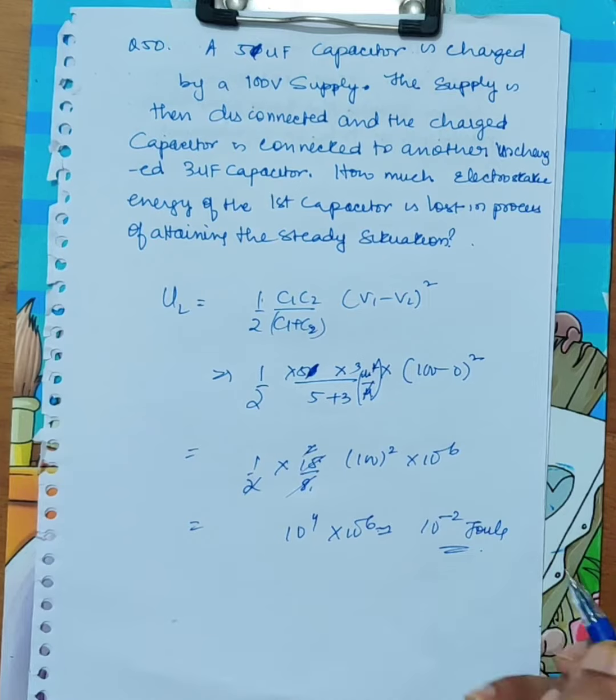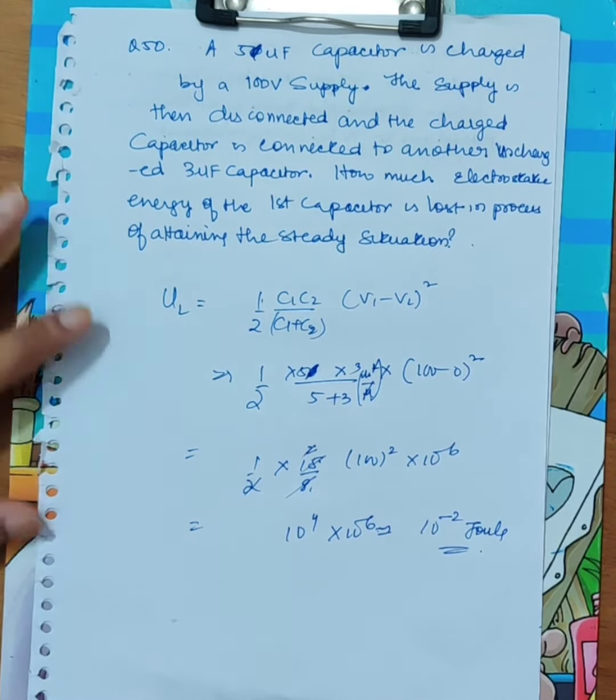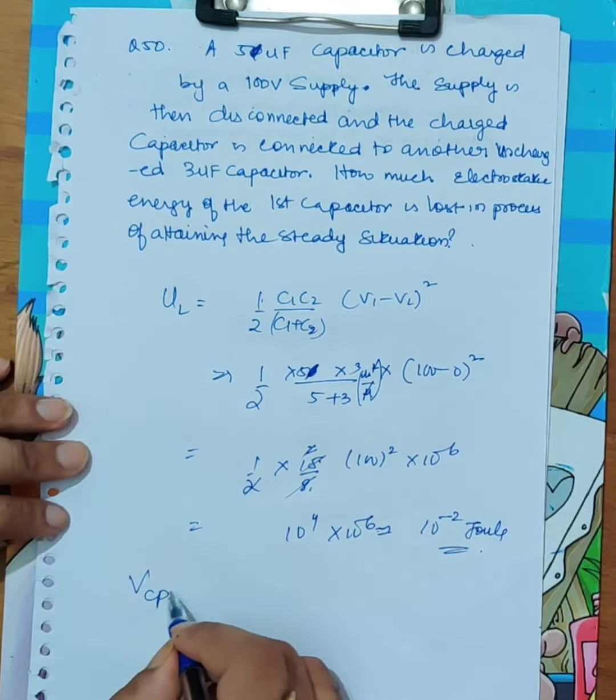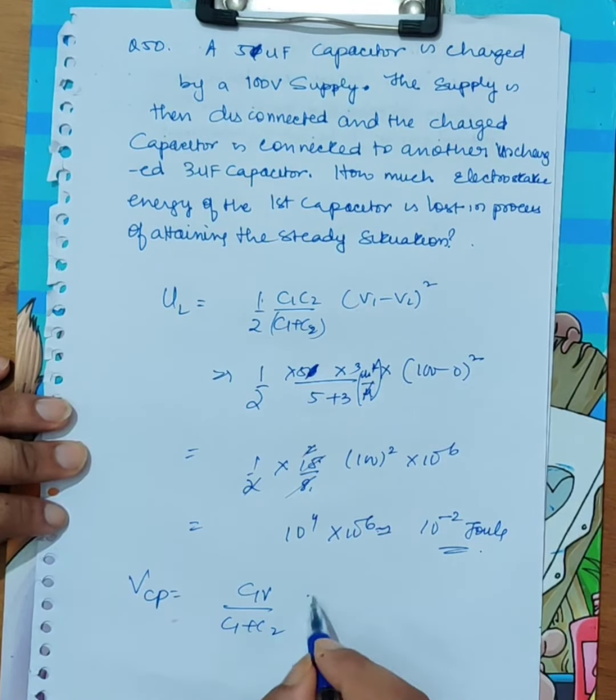So that is the energy loss. Now, if you want to find the common potential, what is it? C1 V upon C1 plus C2.